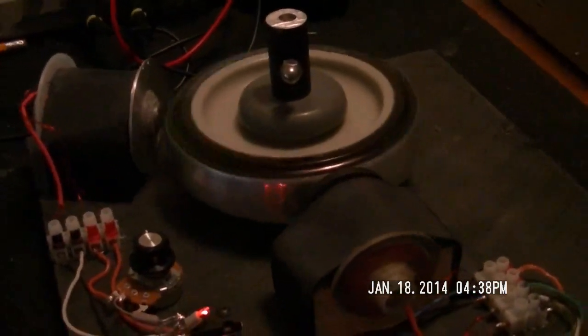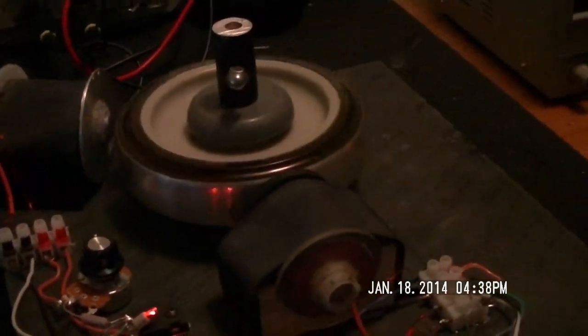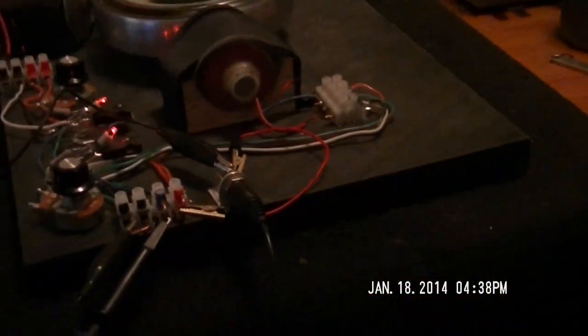Now when I was running this thing with the FETs, I'd get this thing to 2500, almost 2600 RPMs with these two coils. Remember, this is only with 12 volts.